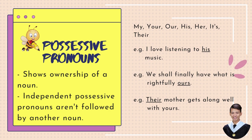Example number two: We shall finally have what is rightfully ours. So, the underlined word 'ours' is our possessive pronoun. Same with the third example: Their mother gets along well with yours. So, the underlined words are the possessive pronouns.